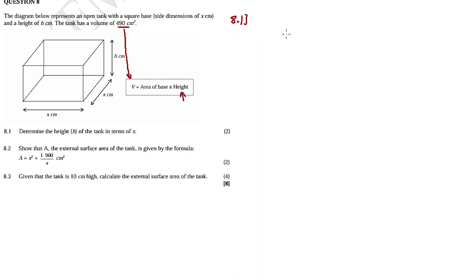So we're gonna say volume is equal to area of base. The base is a square multiplied by the height which is h. What is the volume? 490. Area of base, it's x multiplied by x. This is the base, so the base here too has dimensions x and x, it's a square.